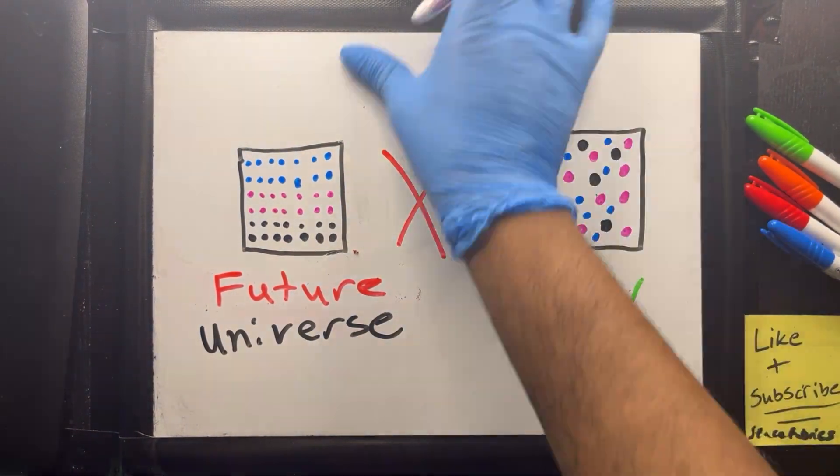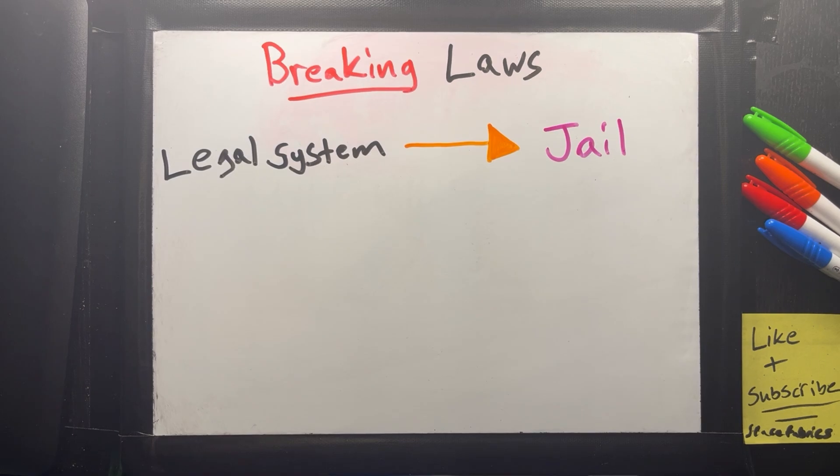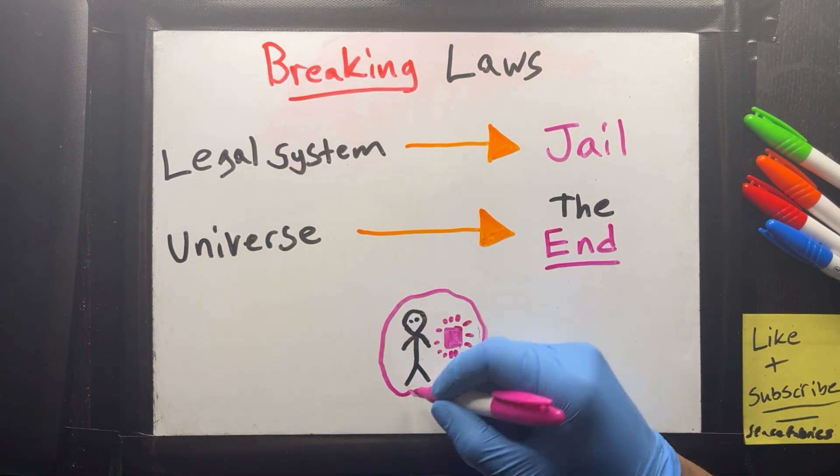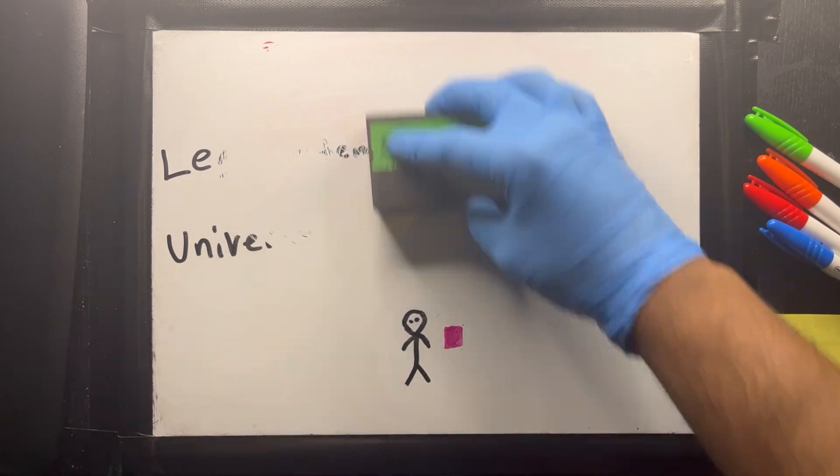Breaking a law in our legal system will end you up in jail. Breaking a law in our universe could end the universe. So this would be one of the official barriers from our laws that would prevent time travel in the way that we understand them so far.